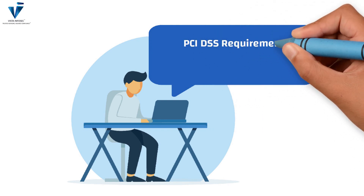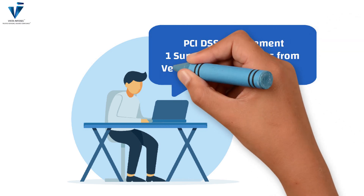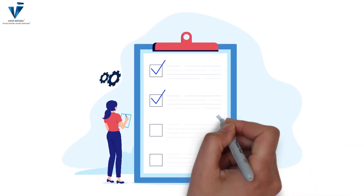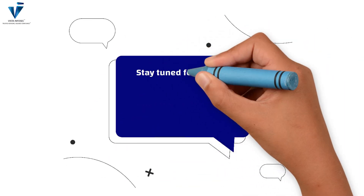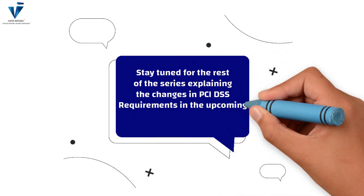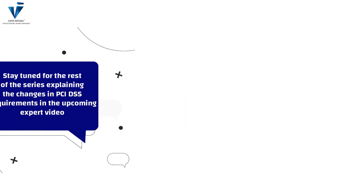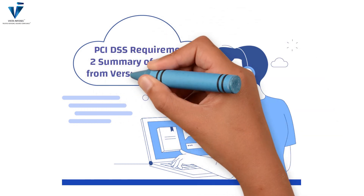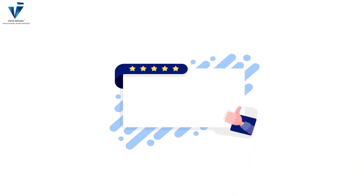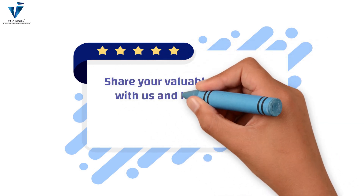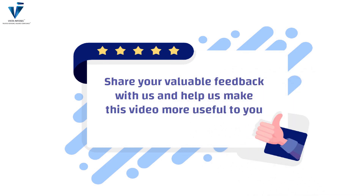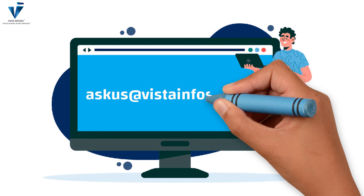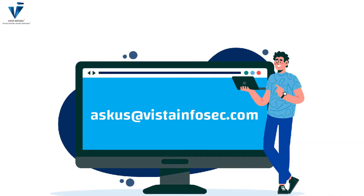With this we end our informative session on PCI DSS Requirement 1: summary of changes from version 3.2.1 to 4.0. We hope this video was useful and cleared most of your doubts. Stay tuned for the rest of the series — next we will be covering PCI DSS Requirement 2: summary of changes from version 3.2.1 to 4.0. We also recommend viewers share their feedback. If you have any queries, do drop us a mail at askus@vistainfosec.com and we'd be more than happy to help. Until then, thank you.